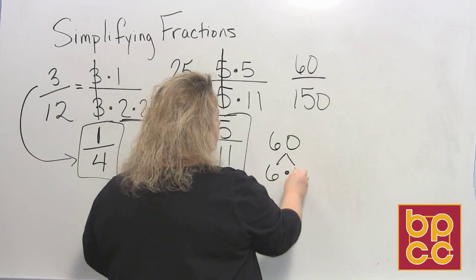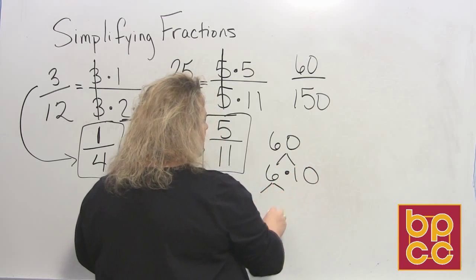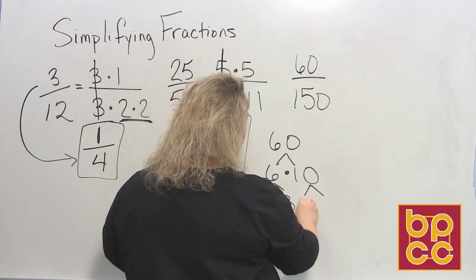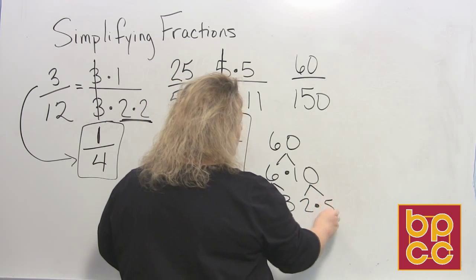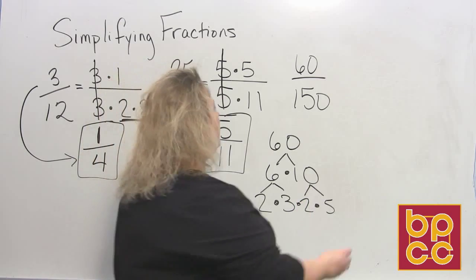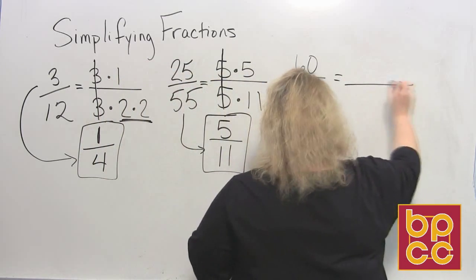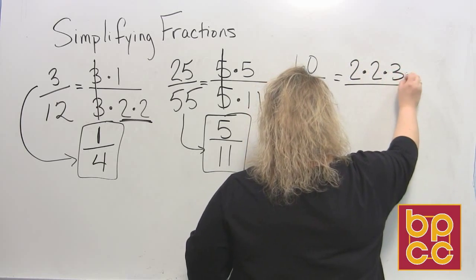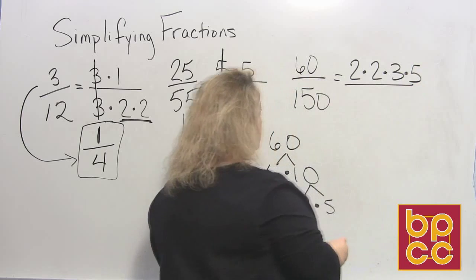60 is 6 times 10. 6 is 2 times 3. And 10 is 2 times 5. So now I have all of the factors that are prime of 60 that I need. So that would be a 2, a 2, a 3, and a 5.